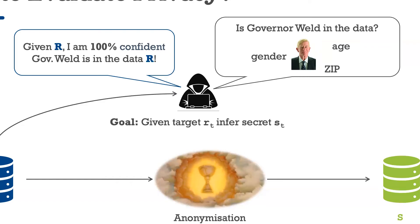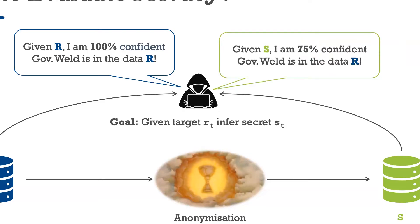For each concern, we then estimate the adversary success of making a correct guess about the target secret given either access to the raw data R or the synthetic or standardized data S, and then compare whether publishing S in place of R substantially reduces the adversary success.